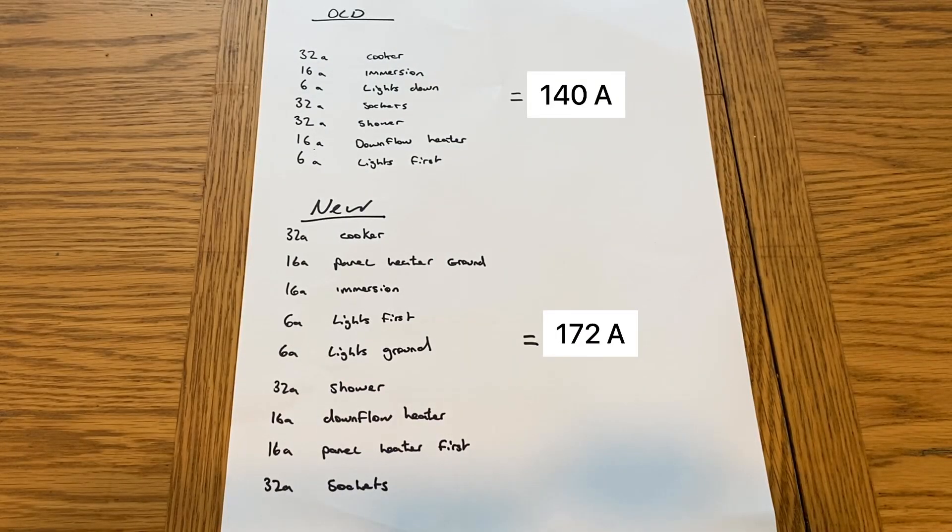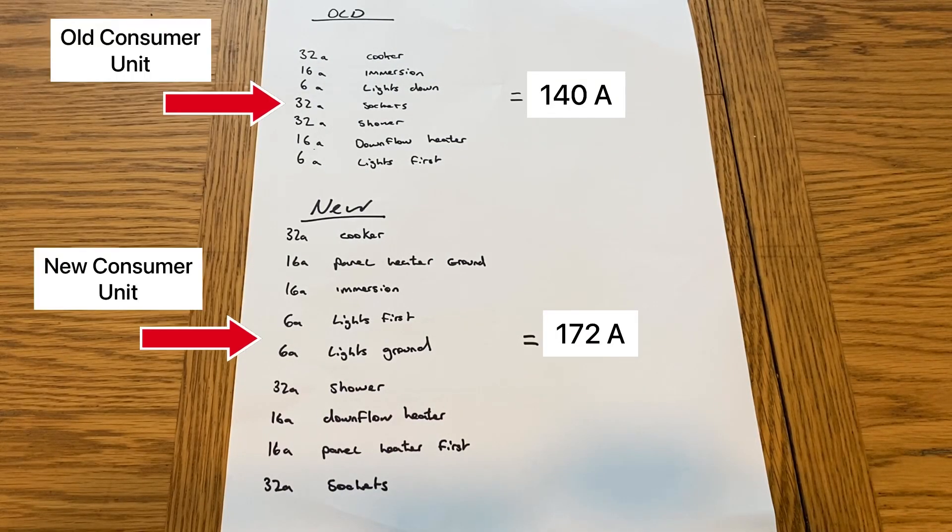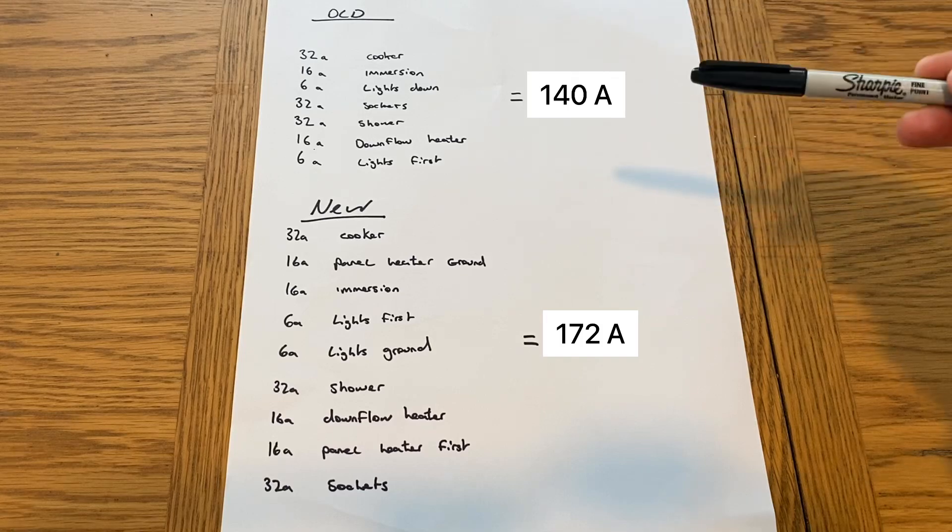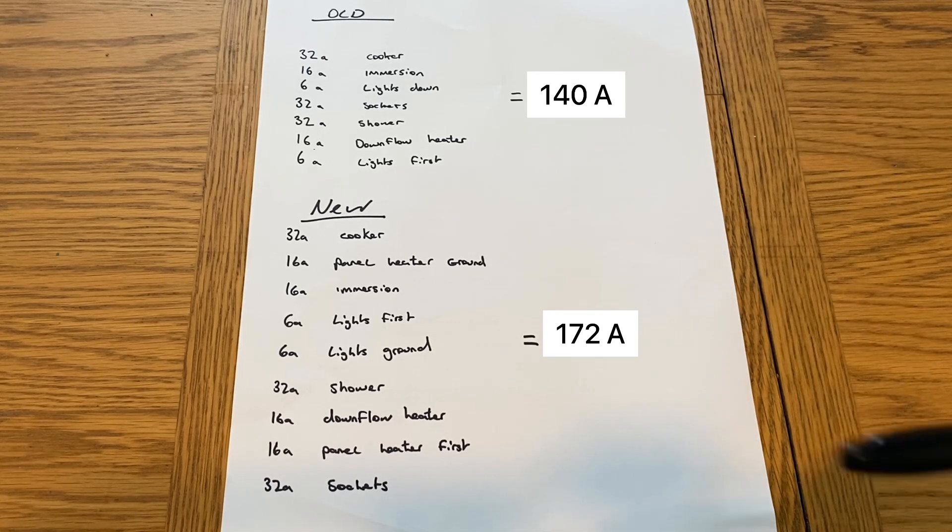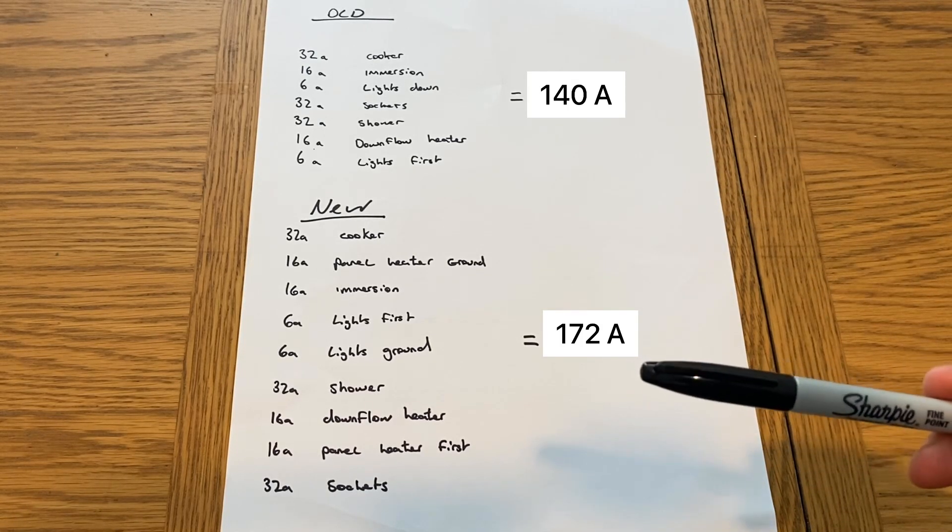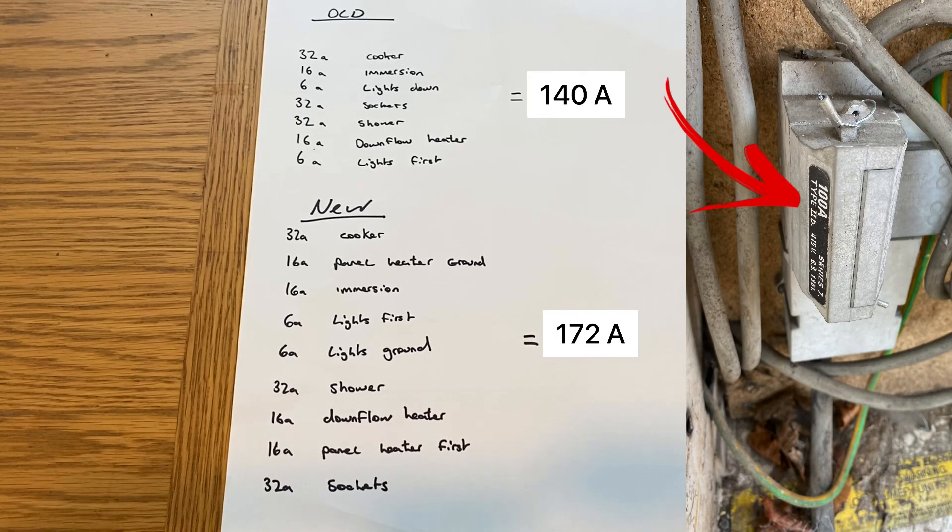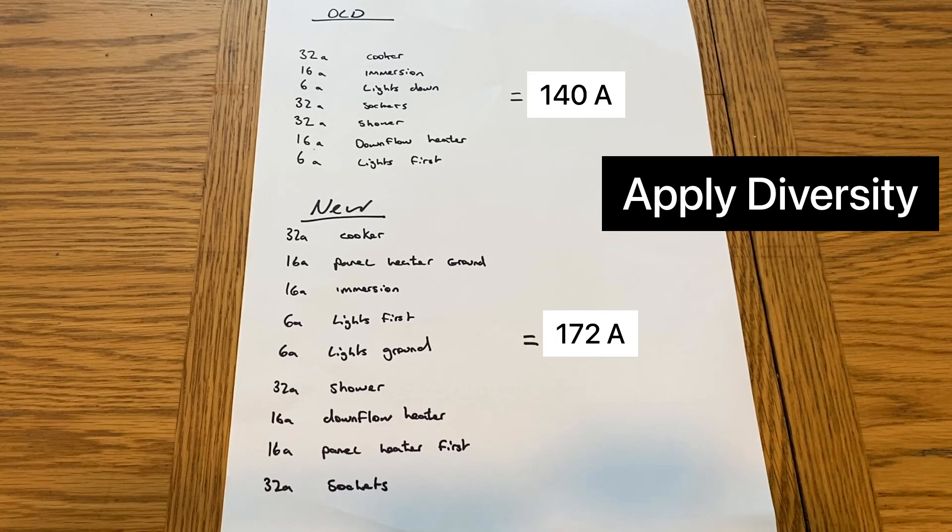Just before we move on to actually doing our calculation, just wanted to show you what these would equal if we didn't apply diversity. Our maximum demand for the old set would be 140 amps and for the new setup would be 172 amps. Now that's not going to be any good to us because we have 100 amp cutout fuse. However, what we're going to do is we're going to apply diversity because not everything will be on 24 hours of the day every day of the year using its full load current.